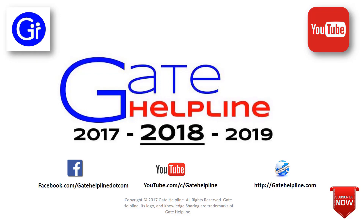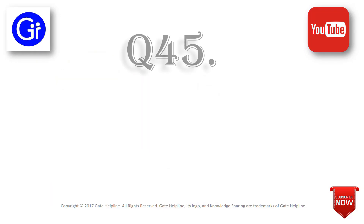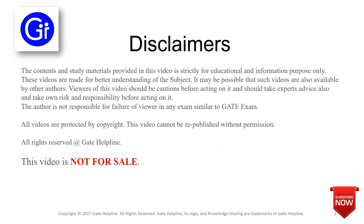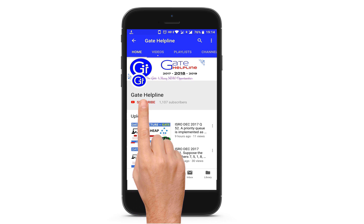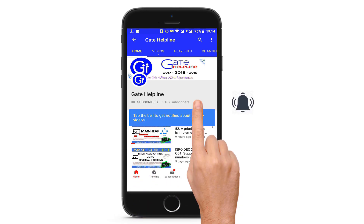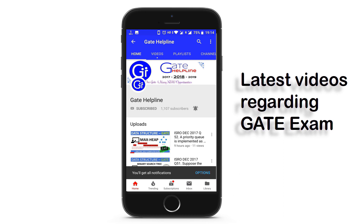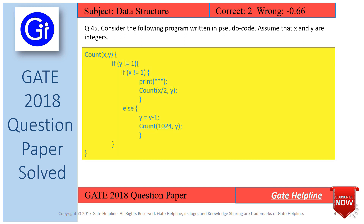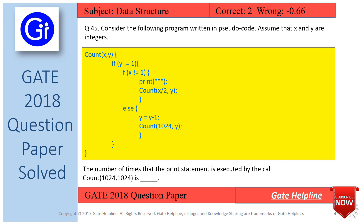Hi friends, you are watching Gate Helpline. In this video we will see question number 45 from GATE 2018 CS question paper. Question 45 is: consider the following program written in pseudocode. Assume that x and y are integers. The number of times that the print statement is executed by the call count(1024, 1024) is?